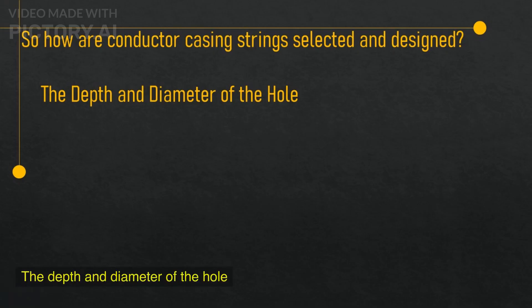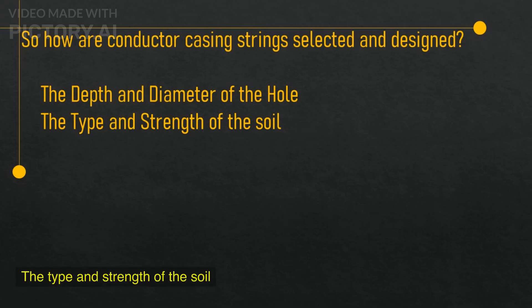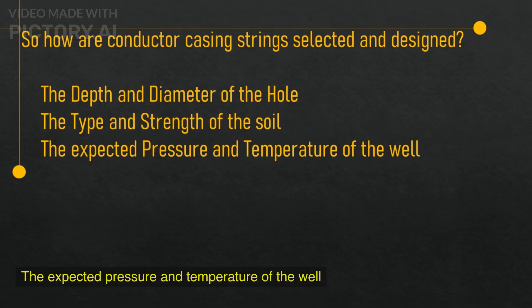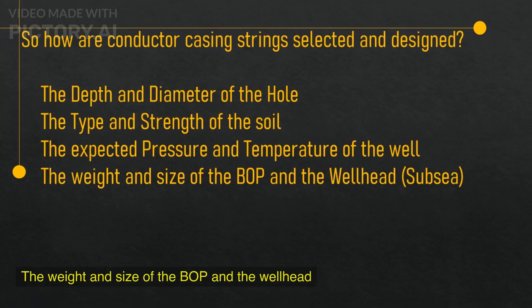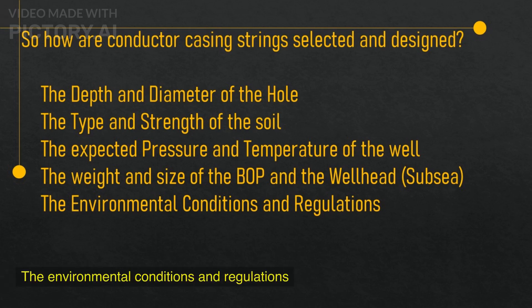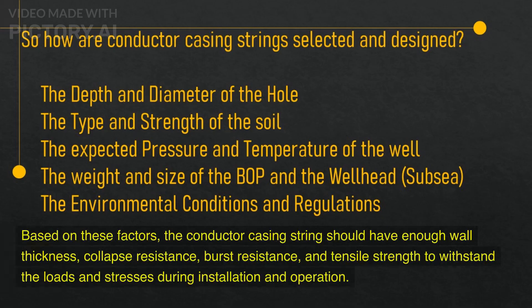These factors include: the depth and diameter of the hole; the type and strength of the soil; the expected pressure and temperature of the well; the weight and size of the BOP and the wellhead; and the environmental conditions and regulations. Based on these factors, the conductor casing string should have enough wall thickness, collapse resistance, burst resistance, and tensile strength to withstand the loads and stresses during installation and operation.